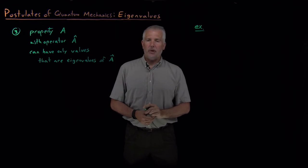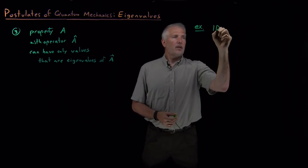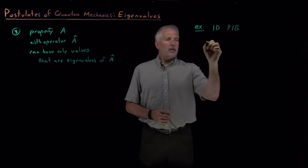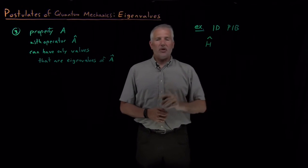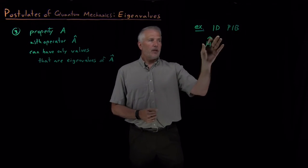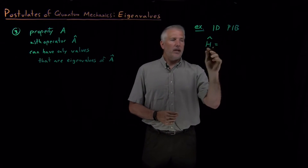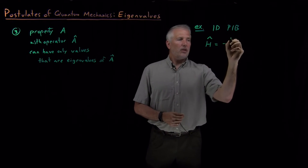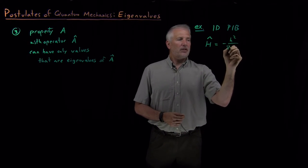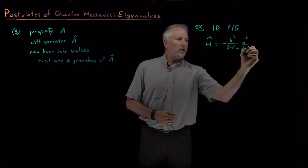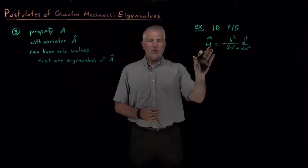for a particle in a box. For the one-dimensional problem for the particle in a box with potential energy zero, that Hamiltonian operator was just the kinetic energy portion of the operator. So second derivative multiplied by these constants with a negative sign. So that's the Hamiltonian operator.